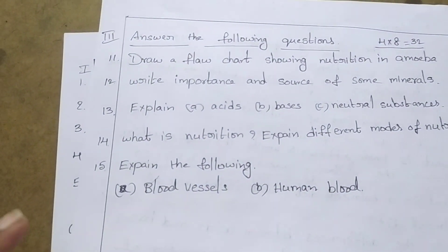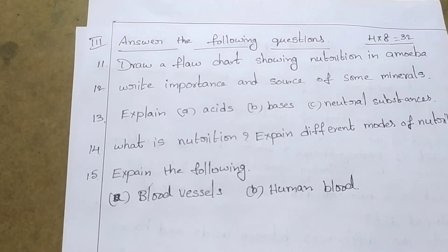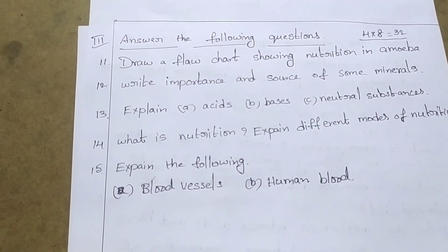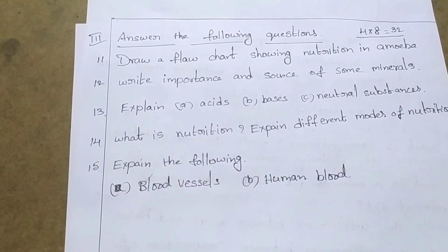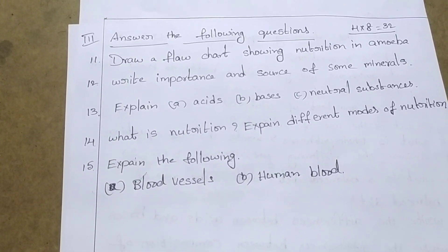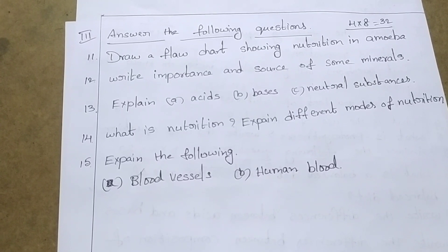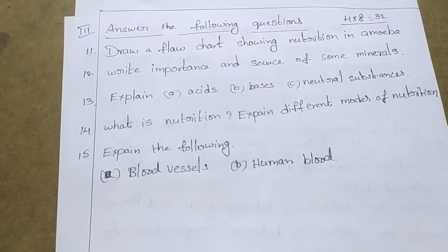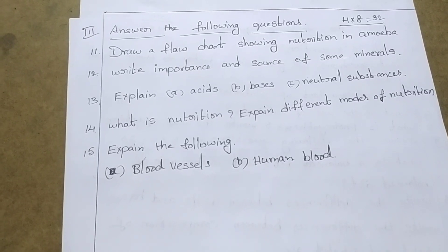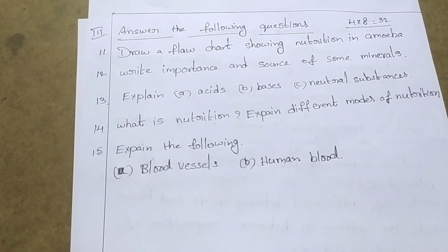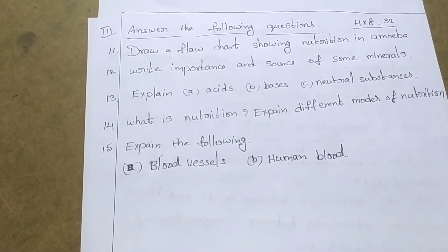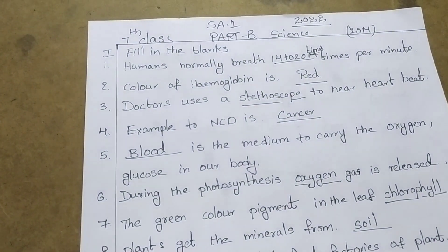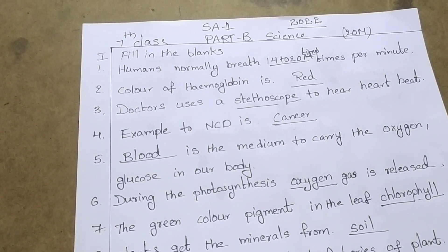Describe the lungs and heart. Answer the following questions: Draw a flowchart showing the nutrition of amoeba. Write the importance and sources of some minerals. Explain acids, bases, and neutral substances. What is nutrition? Explain the different modes of nutrition. Explain the following: blood, blood vessels, and human blood.